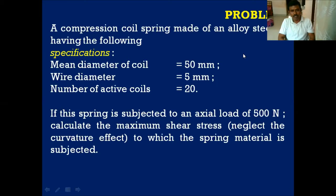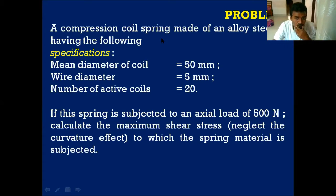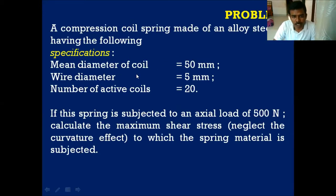So this is just a substitutional shear stress equation. The mean coil diameter is capital D, wire diameter is small d, number of active coils notation is small n equal to 20.